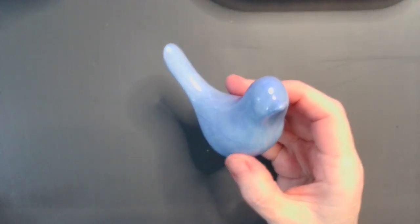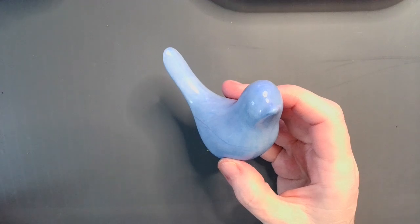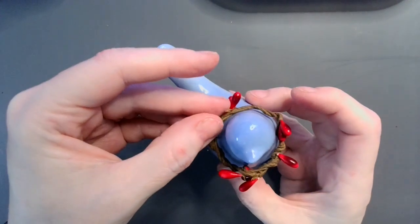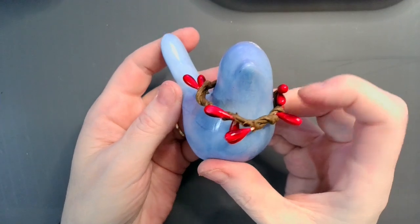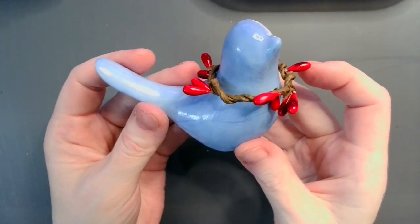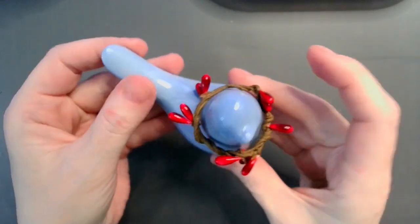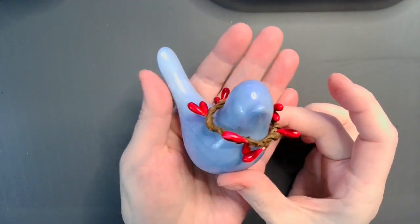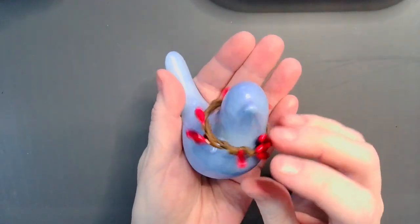And I had some leftover wired berry garland, so I made him a little necklace. You can take it off, you can leave it on, but there he is. Our little birdie buddy.